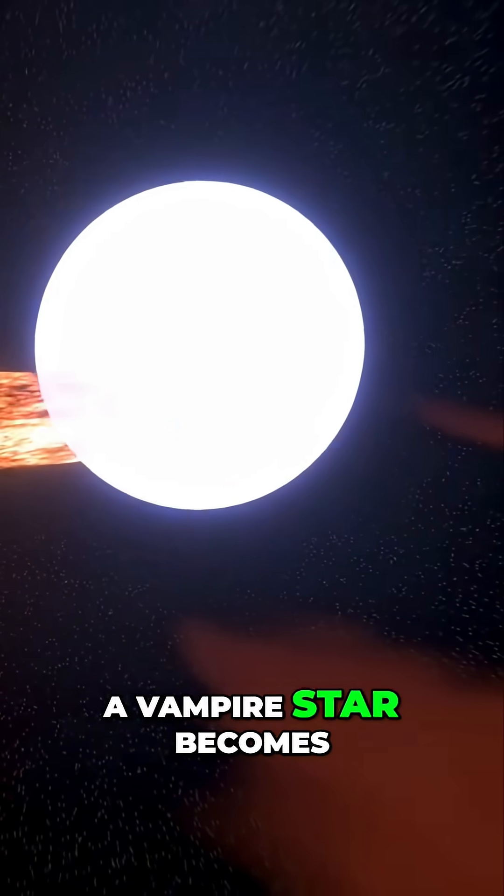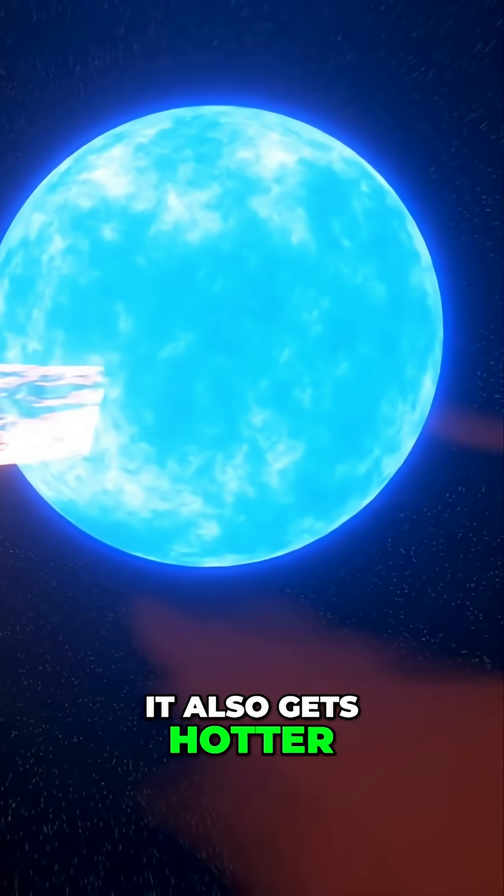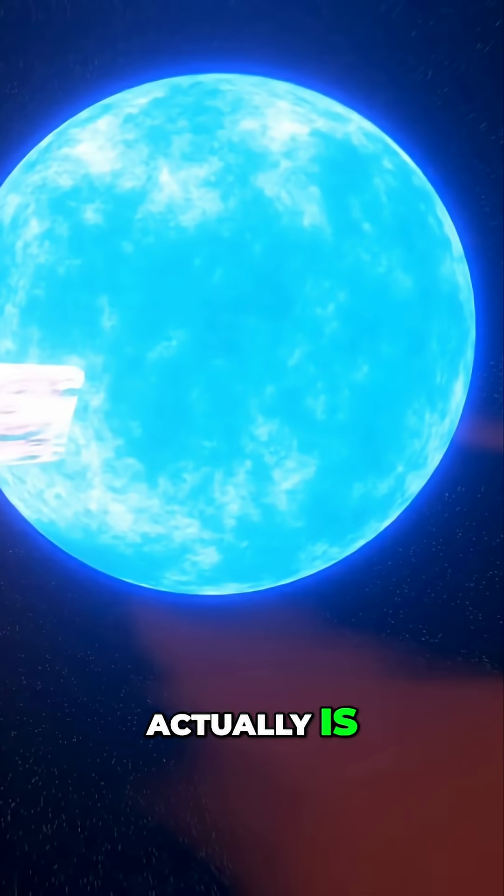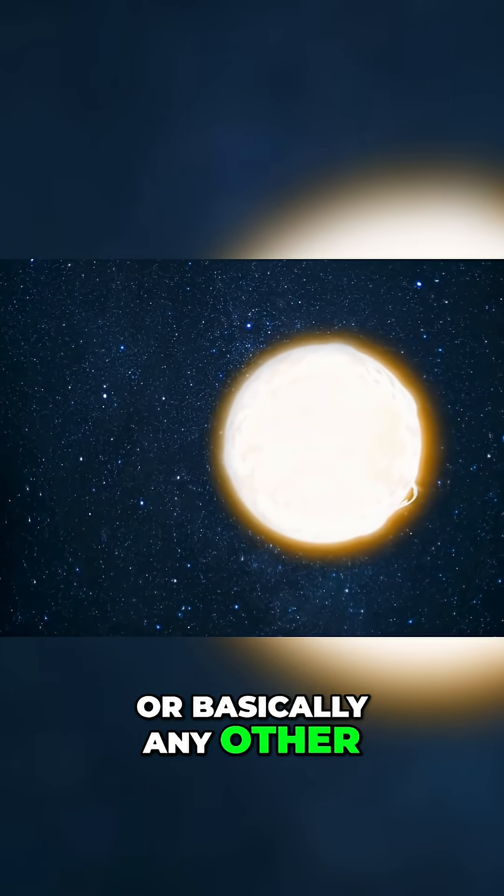A vampire star becomes strikingly blue. It also gets hotter. This way, it seems that it's way younger than it actually is.